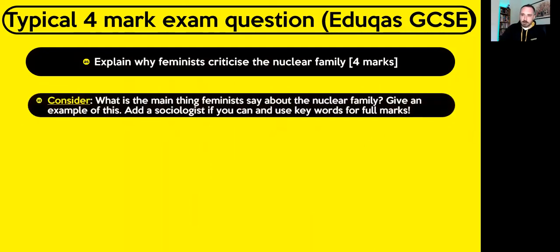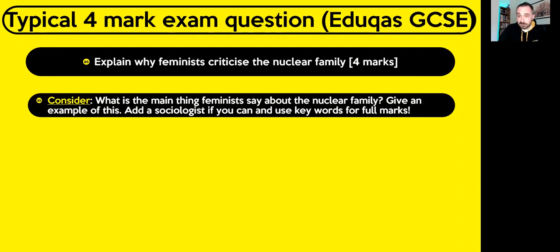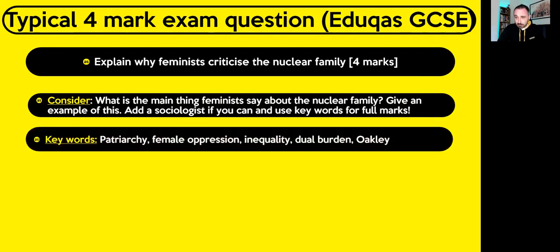I'm going to talk you through how you might actually write this. First of all, what's the main thing that feminists say about the nuclear family — that it's patriarchal and unequal to women? Give an example: women do more domestic work than men. The sociologist? That was Anne Oakley, or we could talk about Delphi and Leonard. Key word from Oakley: dual burden. Now, put that together with key words your examiners will be looking for — things like patriarchy, female oppression, conjugal roles, inequality, dual burden — plus your sociologist names.